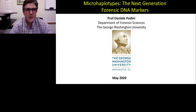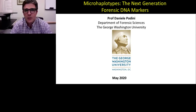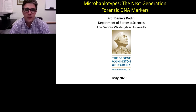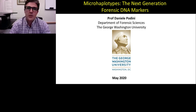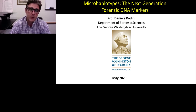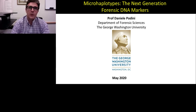Hello, my name is Daniele Podini. I am the department chair at George Washington University in the Department of Forensic Sciences. I'm also a forensic molecular biologist, and today I will be talking to you about some of the research that we've been doing in my laboratory. The title of the talk is Micro-Haplotypes: The Next Generation of Forensic DNA Markers.